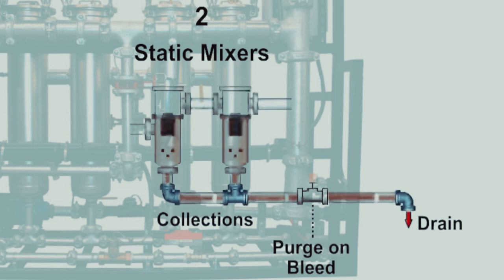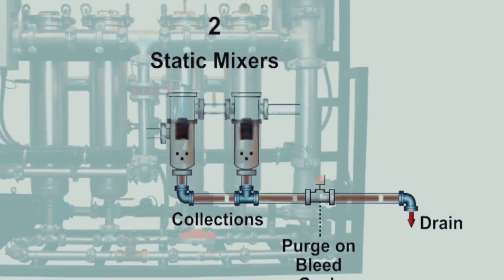These coagulated solids precipitate through a steel mesh media to the bottom of the static mixer vessels and are later purged to drain during regular system bleed cycles.